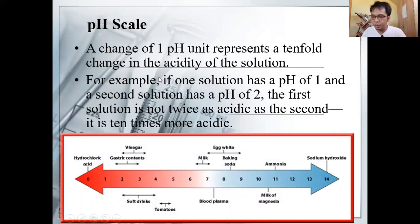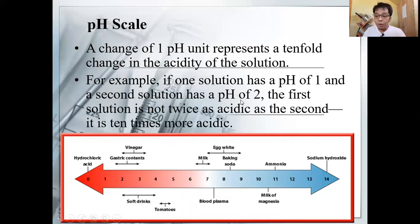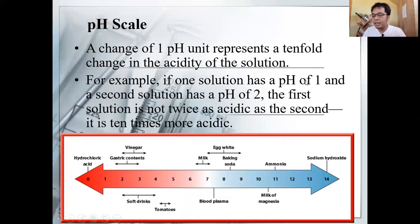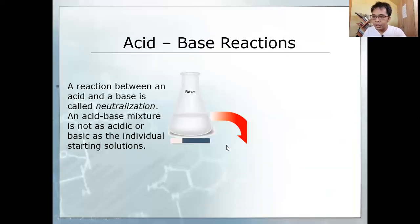If one solution has a pH of 1 and a second has a pH of 2, the first is not twice as acidic — it is 10 times more acidic. This is because you look at the concentration of hydrogen ions, not just the pH number. Taking the antilog of pH 1 and pH 2 and comparing them shows the concentration at pH 1 is much higher. That is how the logarithmic pH scale works.